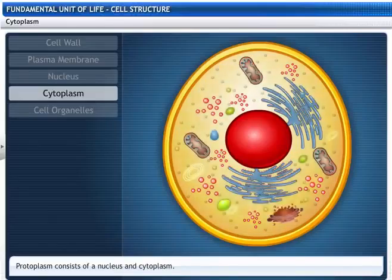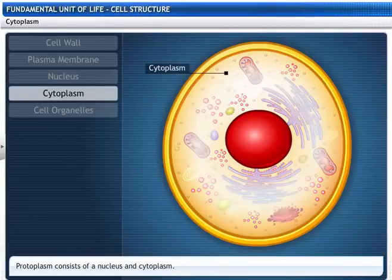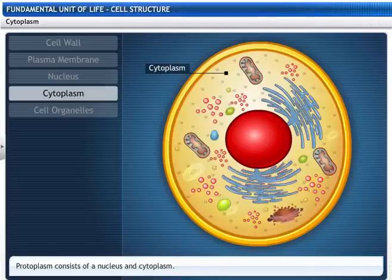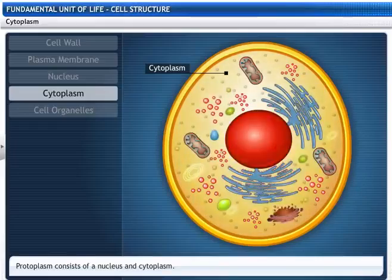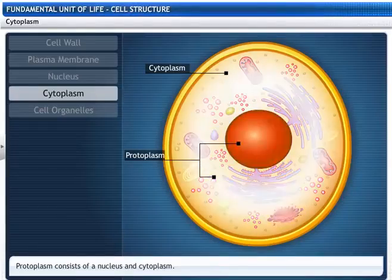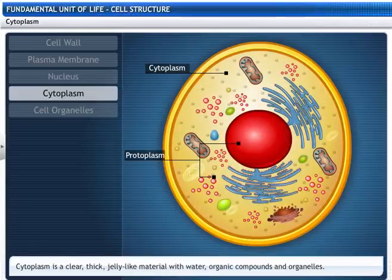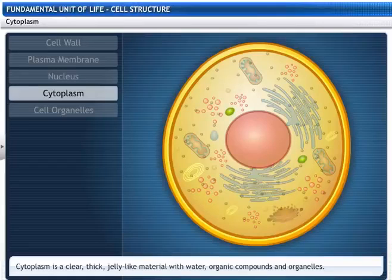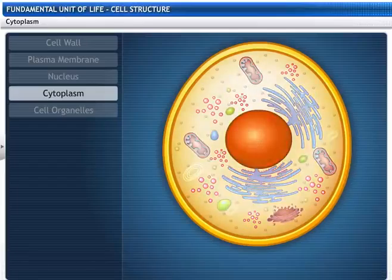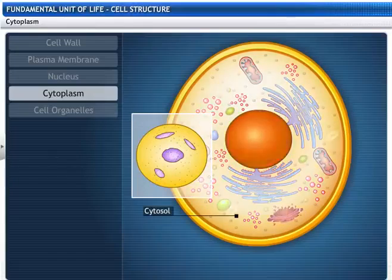The fluid living content between the plasma membrane and the nucleus is called cytoplasm. The nucleus along with the cytoplasm makes up the living content of the cell called protoplasm. The cytoplasm is a clear, thick, jelly-like material with water, organic compounds, and organelles. The liquid part of the cytoplasm other than the organelles is called cytosol.